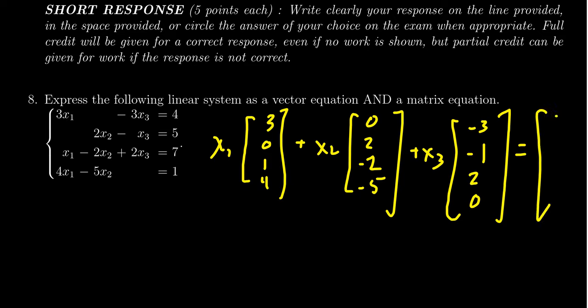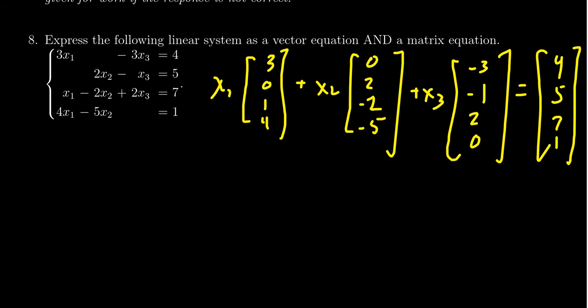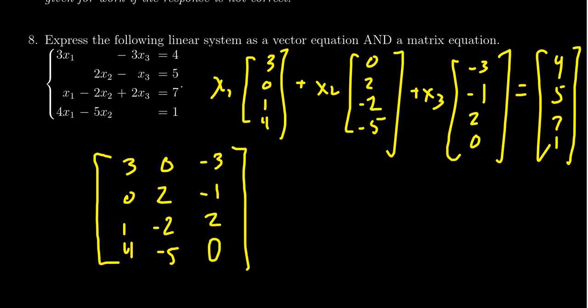This gives us the vector equation. The corresponding matrix equation should have the form Ax equals b, where the matrix A is going to be the coefficient matrix whose columns are actually these columns right here. We can also record them directly from this: we're going to get 3, 0, 1, 4 for the first column; 0, 2, negative 2, negative 5 for the second column; negative 3, negative 1, 2, and 0.